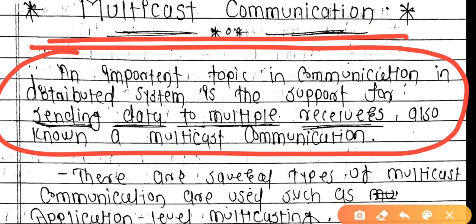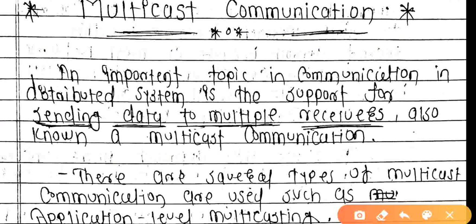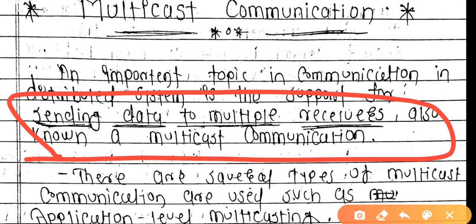An important topic in communication in distributed systems is the support for sending data to multiple receivers, also known as multicast communication. It is sending data to multiple receivers — multiple clients, consumers, or receivers. It is not a simple one-to-one communication; it means sending data to more than one person, which is multicast communication.